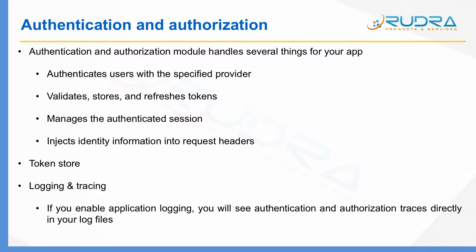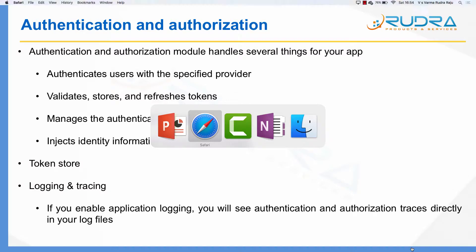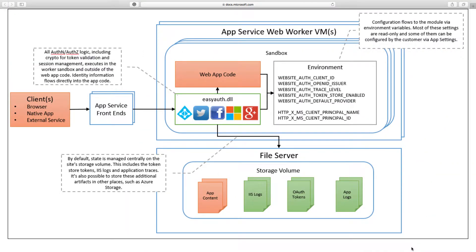To better explain authentication and authorization, I will show you a diagram from Microsoft documentation. As you can see, the request from the client browser comes to the App Service frontend, which then forwards it to the authentication and authorization module. That module includes all authorization and authentication logic — token management, session management, and so on — and it sits outside the web app code.